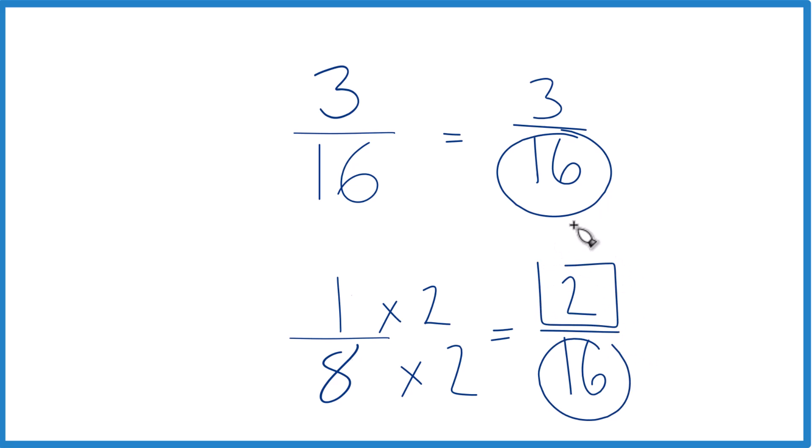That means we can compare the numerators to figure out which fraction's larger, 3 16ths or 1 8th. So 3 is larger than 2, so 3 16ths, that's larger than 2 16ths. And since this is the same as 1 8th, 3 16ths, that's larger than 1 8th.